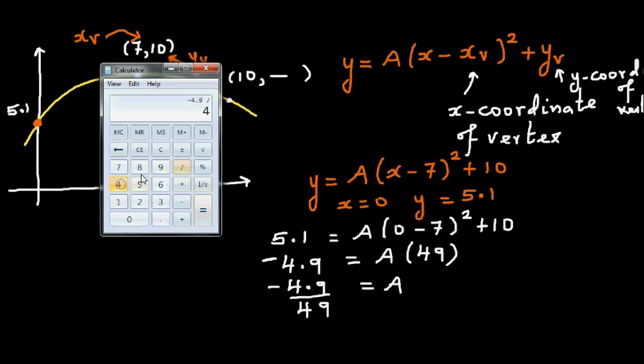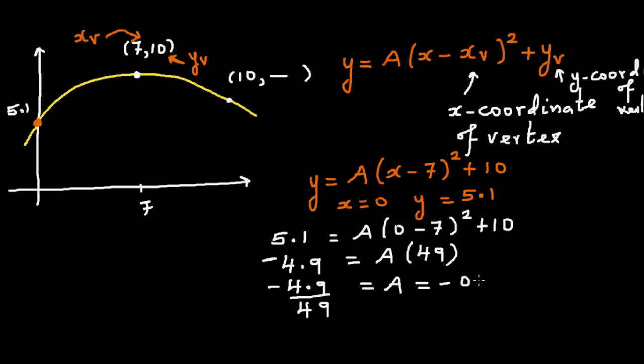Dividing both sides by 49, this is minus 4.9 divided by 49. Let me do it: minus 4.9 divided by 49 is minus 0.1. So this a is minus 0.1.